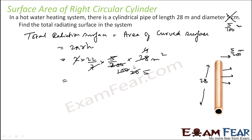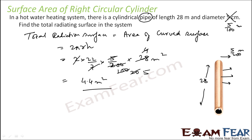That is 4.4 meters square — that is the radiating surface of this system. There were two things to understand here: first, the units were different; and second, since it is a pipe, you don't have to consider the two base and top areas. It's a hollow pipe.